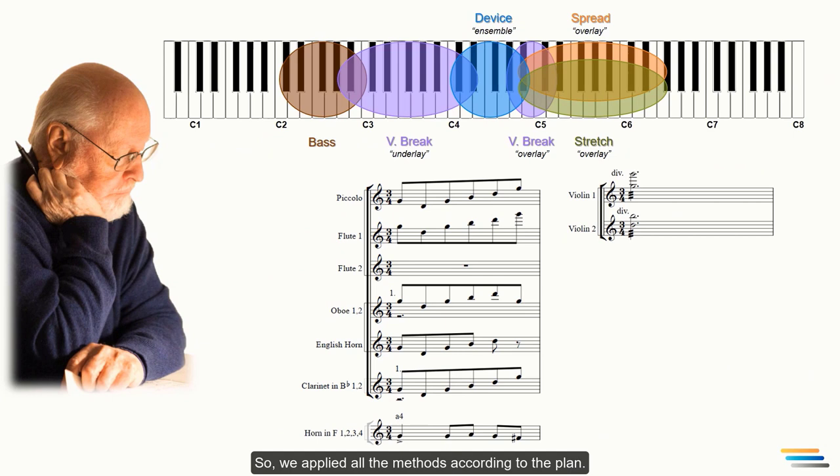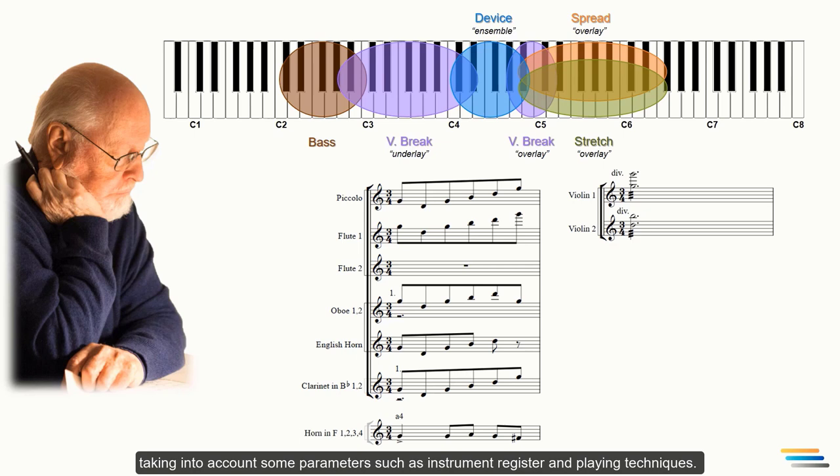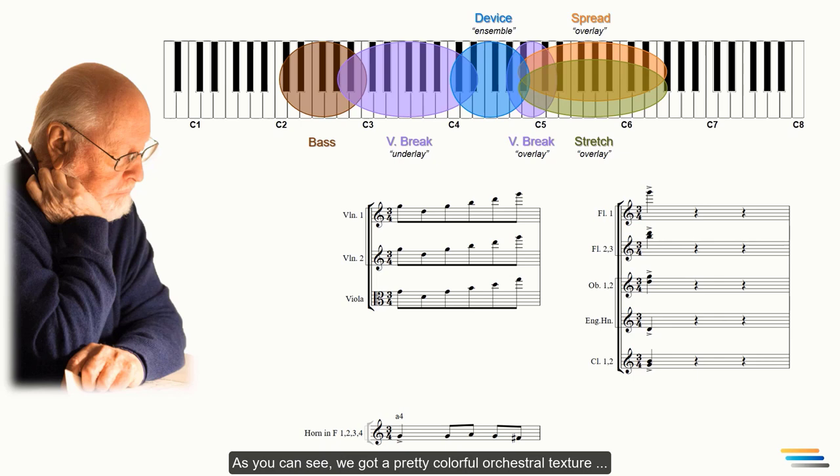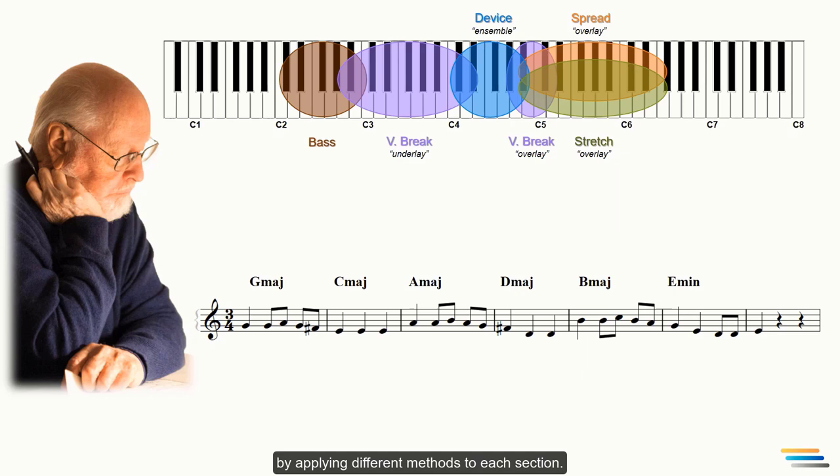So, we applied all the masses according to the plan. You may ask if these masses are relocatable. Of course, the core principle is to have a plan in mind. Any change can be made taking into account some parameters such as instrument register and playing techniques. For example, we can assign the stretch method to strings and the spread method to woodwinds. As you can see, we got a pretty colorful orchestral texture by applying different methods to each section. Finally, it is time to look at the full orchestral score.